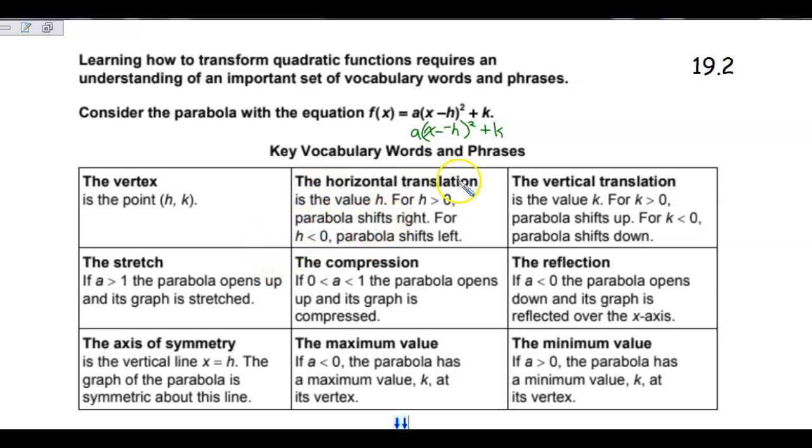If the horizontal translation, horizontal is side to side. So we're talking about the shift from the origin. So if h is greater than zero, it's going to shift to the right. And if it is less than zero, it's going to shift to the left. And that makes sense because h is your x in your ordered pair.